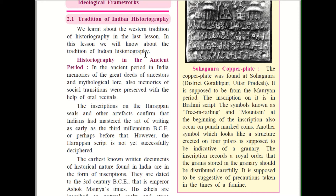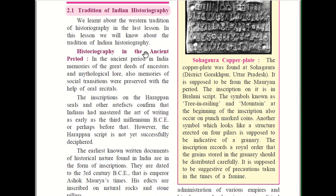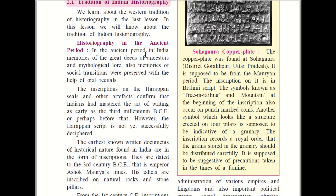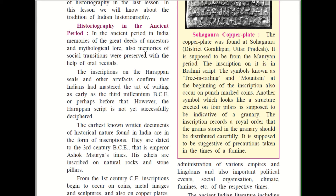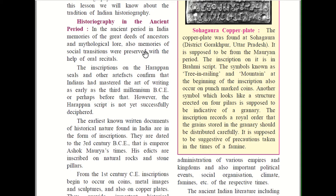Historiography in the ancient period. In the ancient period, things were written on rocks or on stone pillars. In ancient India, memories of great deeds of ancestors — that is, forefathers — and mythological recitals, such as studying from the Ramayana or Mahabharata, were preserved. Oral tradition means passed from person to person by word of mouth. Also, memories of social transactions were preserved with the help of oral recitals — that is, performance of a program of music by a solo singer or by a group of singers.